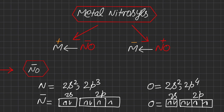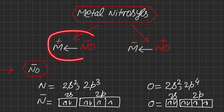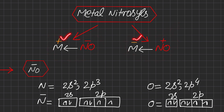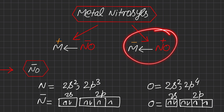In the NO⁻ form, the metal loses one electron which is gained by NO, giving the metal a positive charge and nitrosyl a negative charge; a lone pair is then donated from nitrosyl to the metal. In the NO⁺ form, one electron is lost by the nitrosyl molecule and goes to the metal, and the lone pair on NO⁺ is donated toward the metal. In both forms the overall complex is neutral due to charge balance. The question is: how do we identify whether nitrosyl exists as NO⁻ or NO⁺, since both look neutral overall?